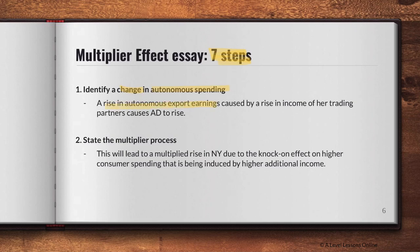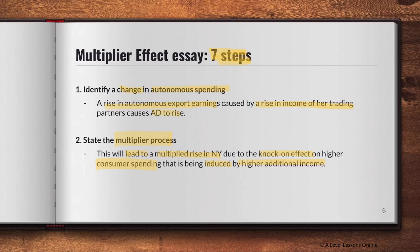Step one is to identify a change in autonomous spending — a change in C, I, G, X, or M. For example, a rise in autonomous export earnings caused by a rise in income of your trading partner. Remember, it must not be a change in your own country's national income or real GDP — it can be a change in someone else's. This change will cause AD to rise.